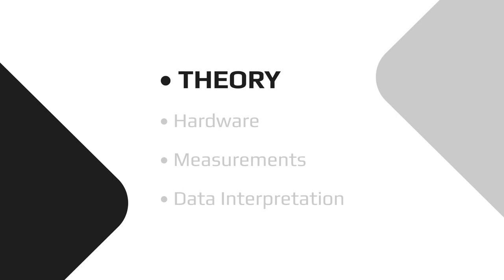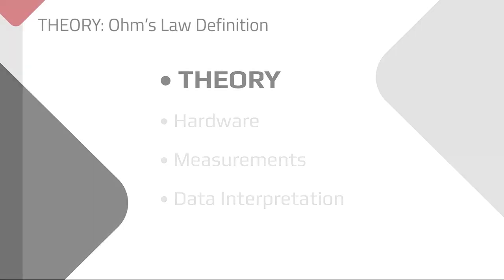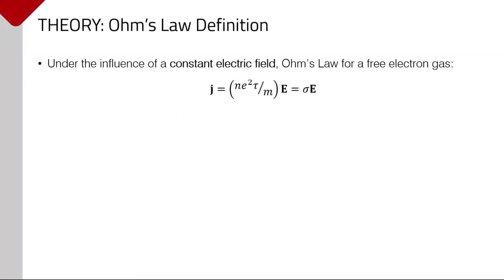The presentation will cover four primary topics, beginning with the theory behind electronic transport measurements. From the Drude theory of metals, we can express the relationship between the current density vector J and the associated electric field E, as shown. The constant which defines the proportionality between these two vectors is the conductivity sigma, or inversely, the resistivity rho.